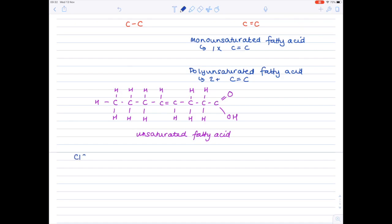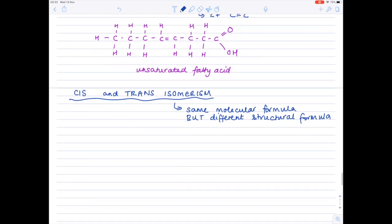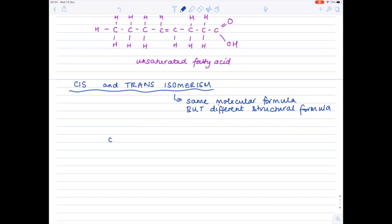The last thing we need to touch on is cis and trans isomerism. Now remember that an isomer is a compound or molecule with the same molecular formula, but different structural formula. So let's again touch on chemistry to actually represent this.